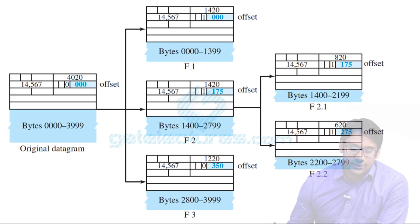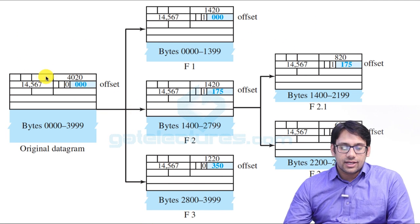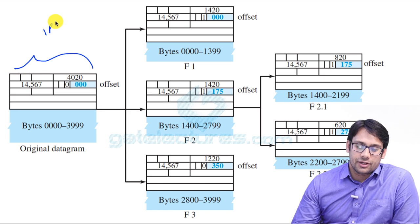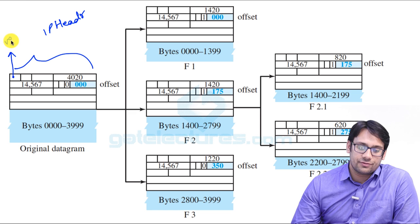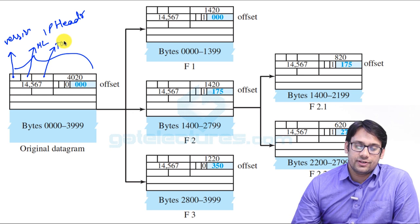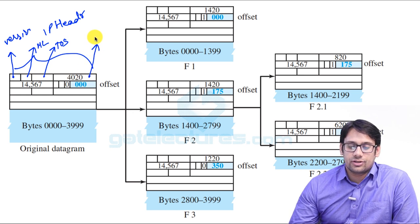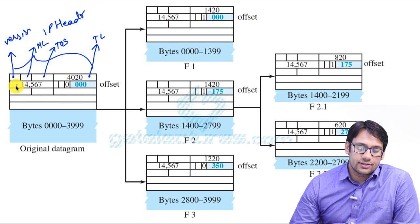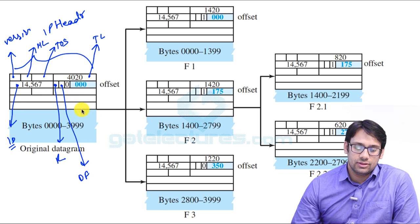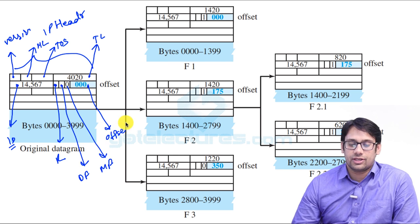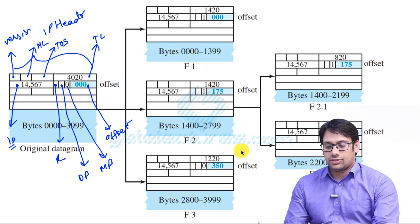Here you can see this table representing an IP header. Every table has a few parts — for example, the version field, the header length field, the type of service field, the total length field, the identification field, the reserved field, the do not fragment field, the more fragment field, and the offset field. We will discuss each and every field one by one.